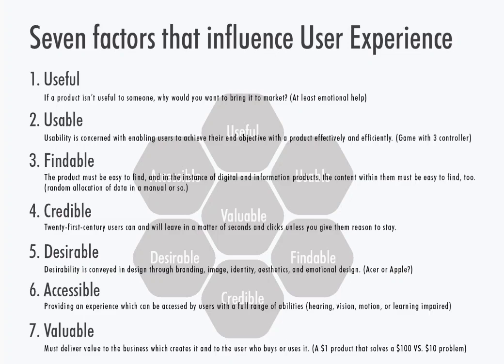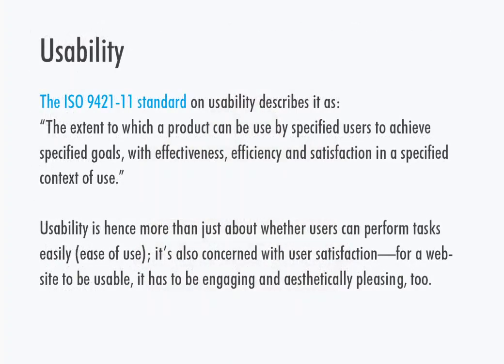The sixth factor is accessibility — it's about providing an experience that can be accessed by users with a full range of abilities, including those who are hearing, vision, motion, or learning impaired. We have talked about airport wayfinding signs as an example previously. The final factor is that a product should be valuable — it must deliver value to the business that creates it and to the user who buys or uses it. Users would choose a one-dollar product that solves a hundred-dollar problem rather than a ten-dollar one.